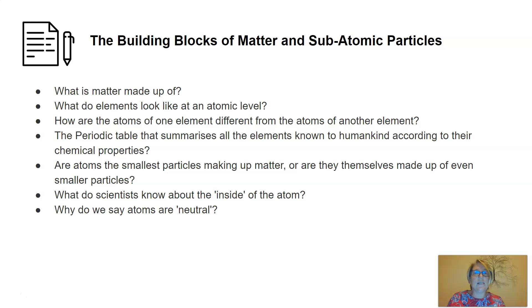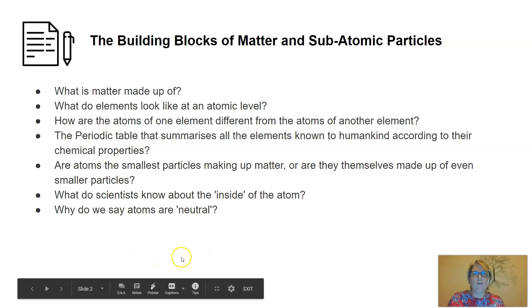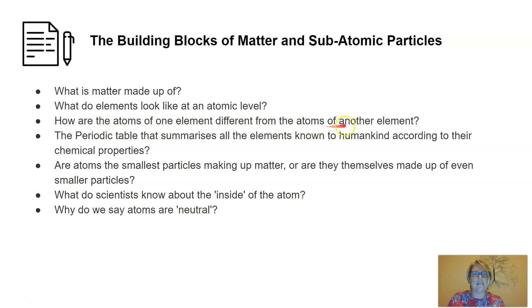We're going to look at what matter is made up of, what elements look like at an atomic level, and how atoms of one element differ from atoms of another element. We're going to examine the periodic table that summarizes all the elements known to mankind according to their chemical properties. Are atoms the smallest particles making up matter, or are they themselves made up of even smaller particles? What do scientists know about the inside of the atom, and why do we say atoms are neutral? There's lots to get through in this lesson. I hope you're ready.